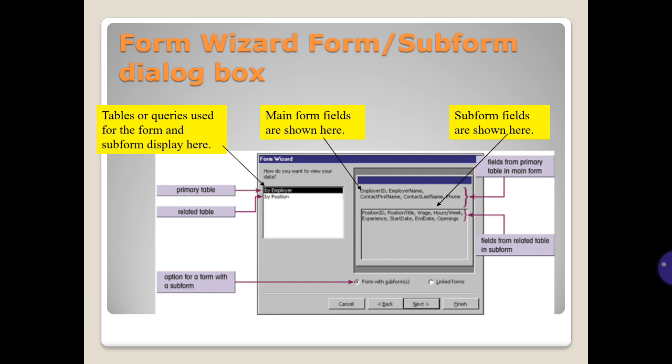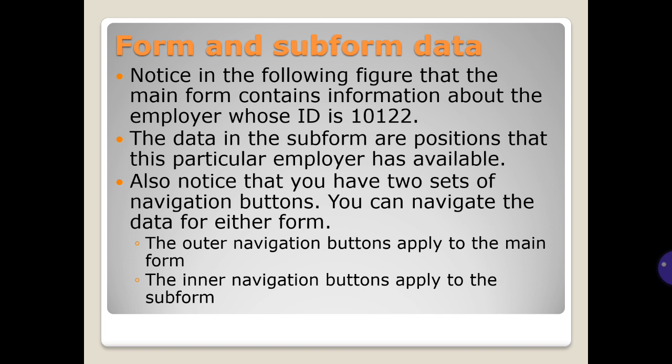A form with a sub form is a great way to display data for tables with a one-to-many relationship. In the form/sub form dialog box, the table or query used for the form and sub form is displayed. Main form fields are shown here and sub form fields are shown here. Notice that the main form contains information about the employee, while the sub form data contains the positions that this particular employer has available. You have two sets of navigation buttons — outer ones apply to the main form and inner ones apply to the sub form.